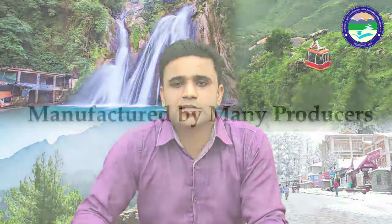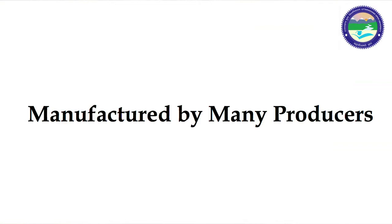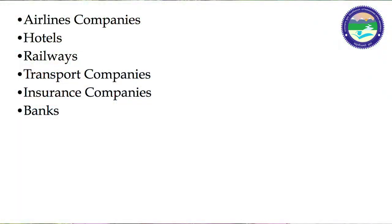The next feature is that tourism products are manufactured by many producers. Tourism products are assembled by including many components, each manufactured by different producers. These include airline company services, hotel rooms, railway services, transport company services, insurance company services, and bank services. After purchasing all these components from various service providers, a travel agency assembles them into a complete tour package.